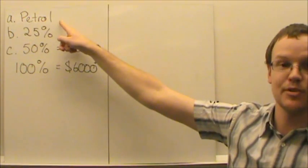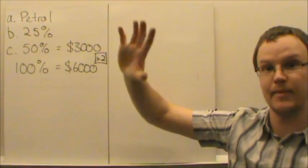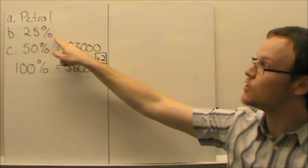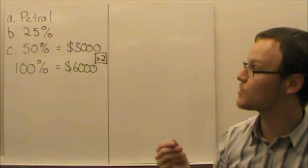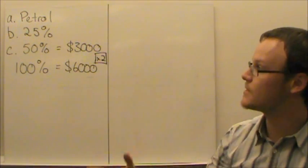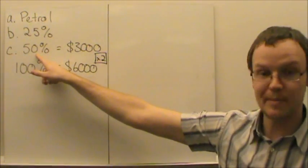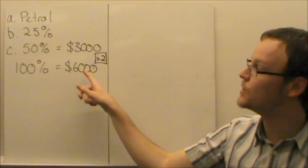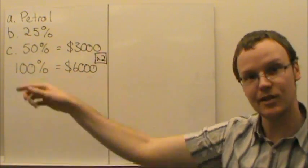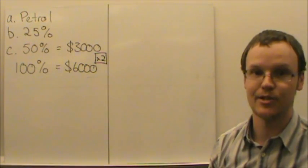So petrol was the amount that most money was spent on, 25% was the percentage of money spent on maintenance out of the entire thing, and if petrol, which was 50%, was $3,000 spent, multiplying that by 2 gives 100% of the entire spend, and that is $6,000.